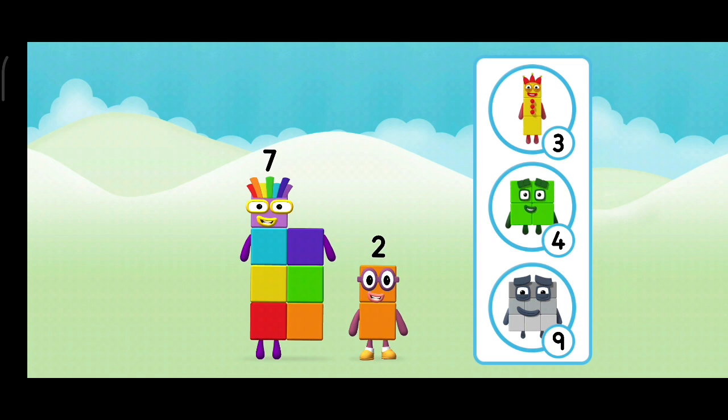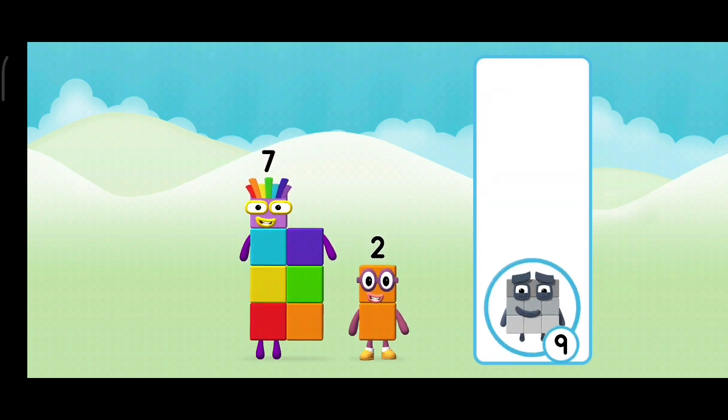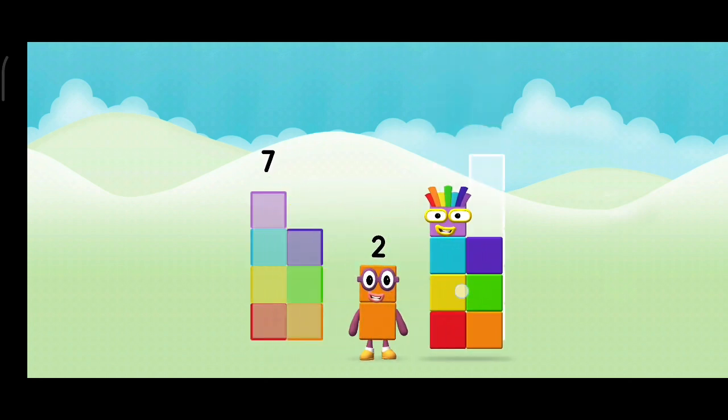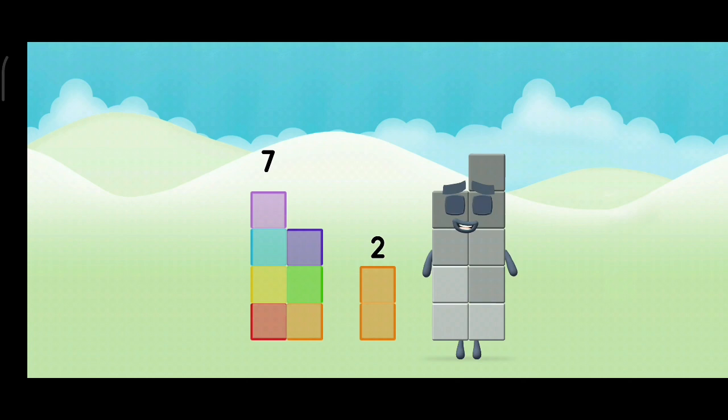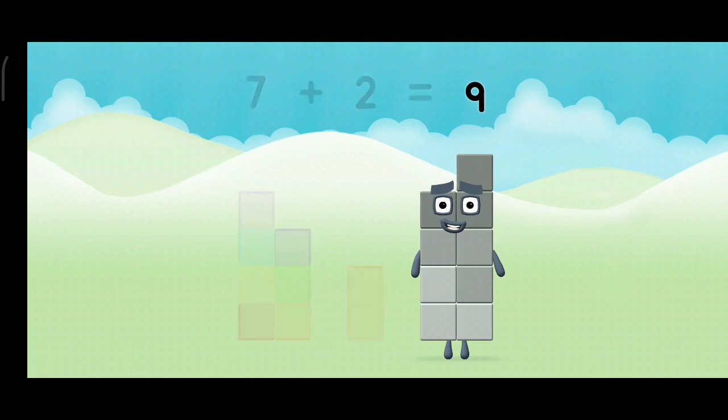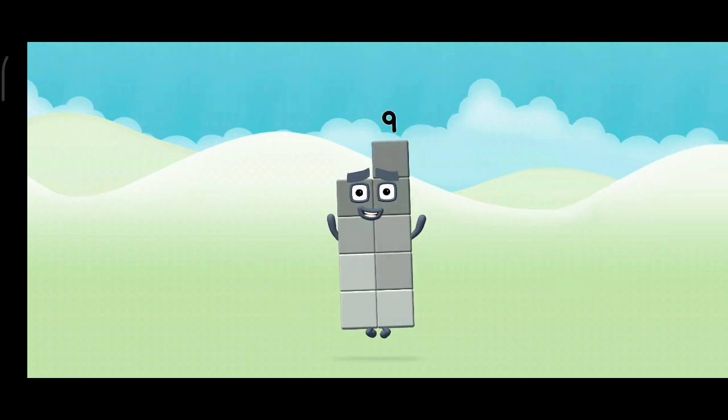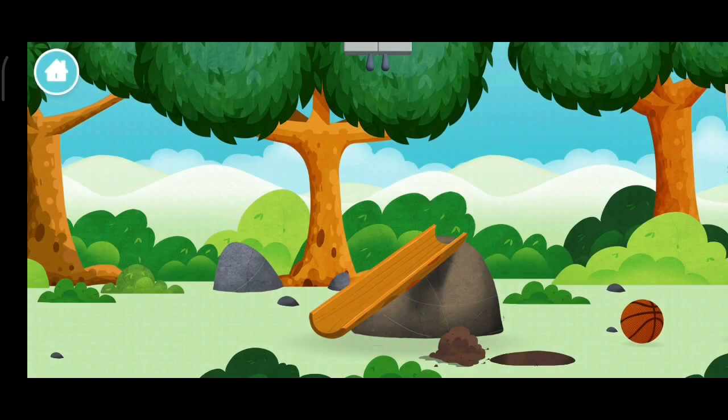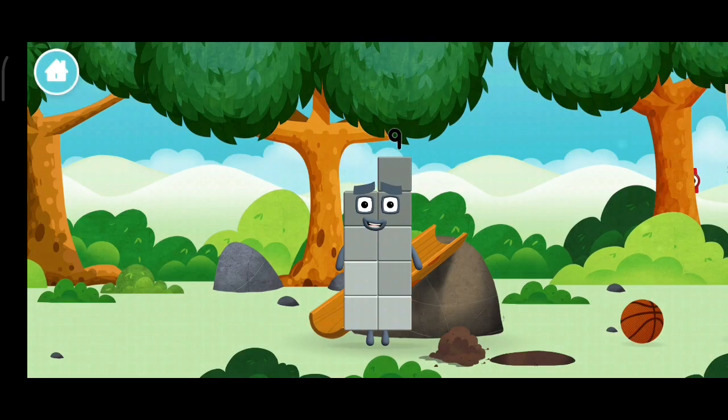What number block will you make when you add these two number blocks together? That's the correct answer. Now add the number blocks together. Two. Seven plus two equals nine. Congratulations! You made a new number block.